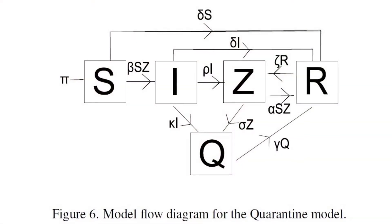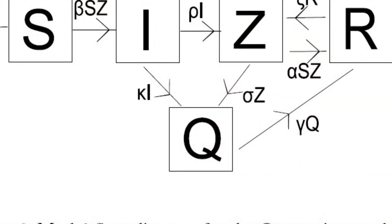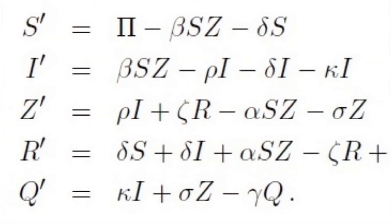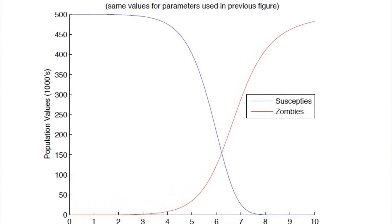Das nächste Modell fügt eine Quarantäne hinzu. Wir können infizierte und Zombie-Gruppen in Quarantäne setzen — Gruppe Q. In der Quarantäne können Infizierte oder Zombies versuchen auszubrechen, schaffen es aber nicht, werden getötet und wandern mit einem Parameter in die Remove-Gruppe zurück. Die Differenzialgleichungen und Determinanten zeigen dasselbe Ergebnis: Die Zombies übernehmen wieder die Überhand, alle Menschen sterben — nur etwas verzögert.